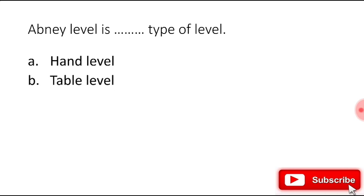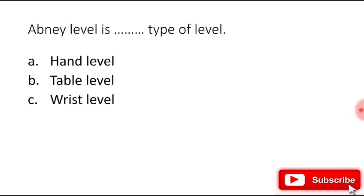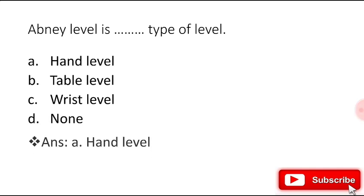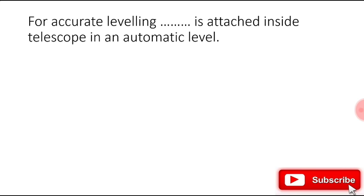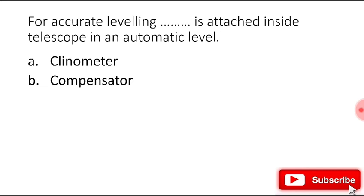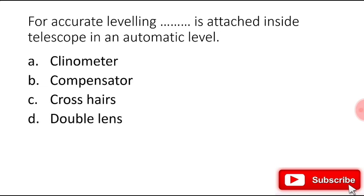Ebony level is what type of level: hand level, table level, which level, or none? The right answer is hand level. For accurate leveling, what is attached inside the telescope in the automatic level: clinometer, compensator, crosshairs, or double lens? The right answer is compensator.